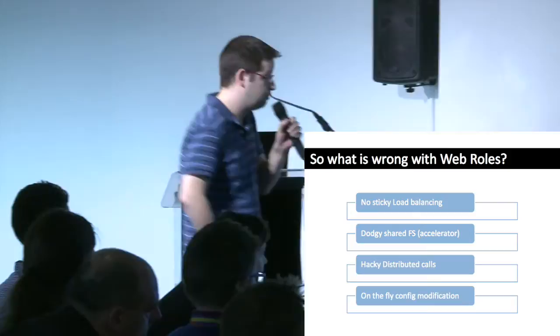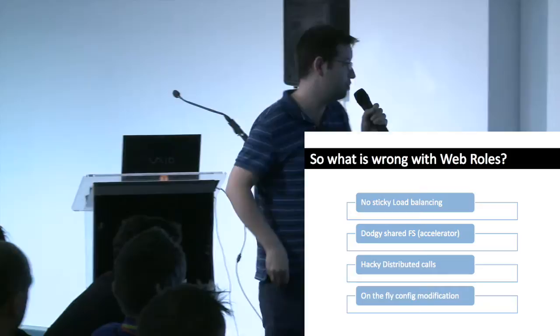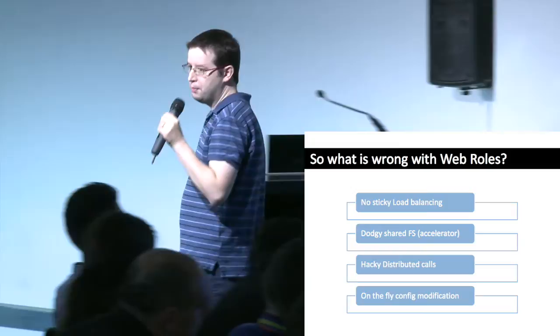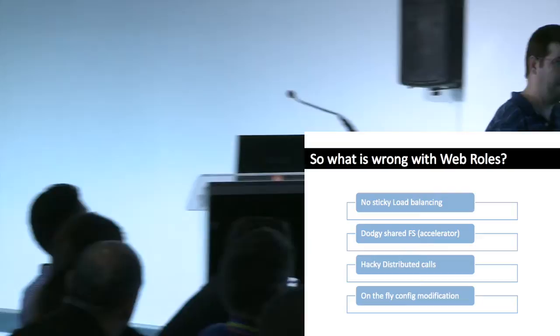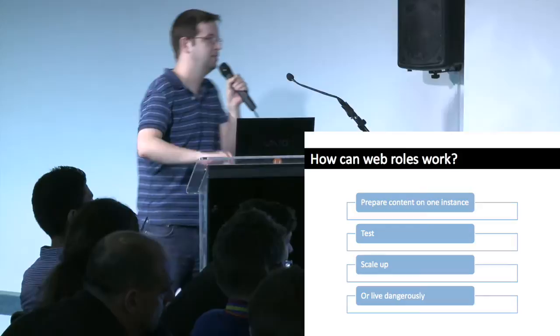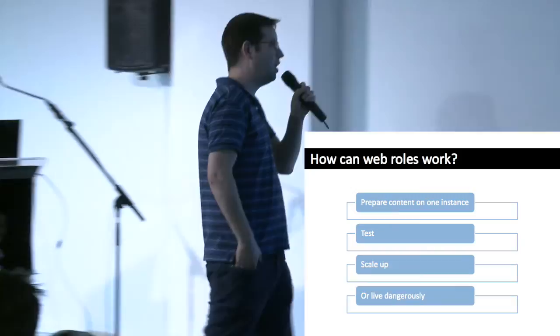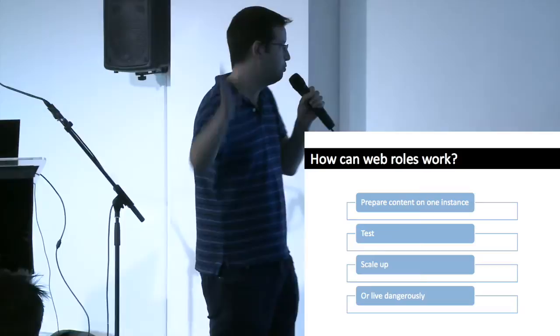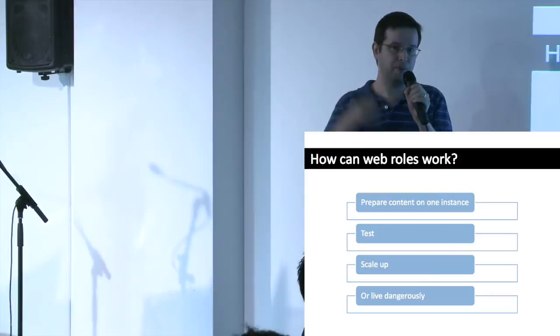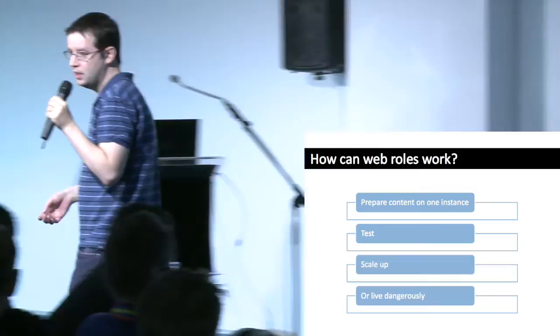The concerns with web roles were: no sticky load balancing, so you couldn't route to that one back-office instance; dodgy shared file system using the accelerator's try-five-times approach; and hacky distributed calls — to update the cache across instances it would actually go in and modify the Umbraco config, open up the XML and hack things in and out. It all just felt a little bit dirty. With web roles, I would prepare content on one instance, test it ready to go, then scale up — but I wouldn't be comfortable doing a site with continuous content updates in web roles.